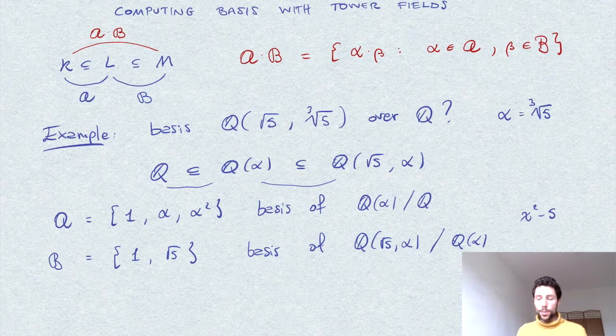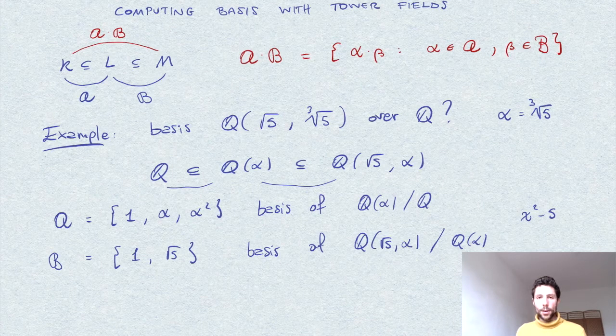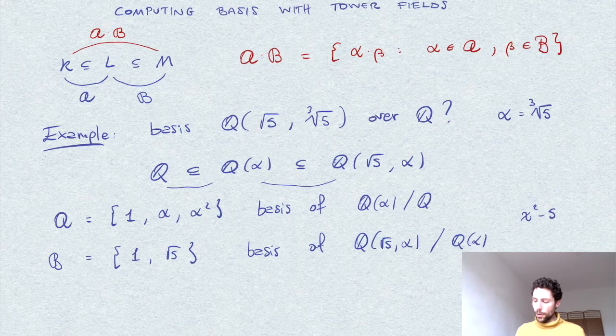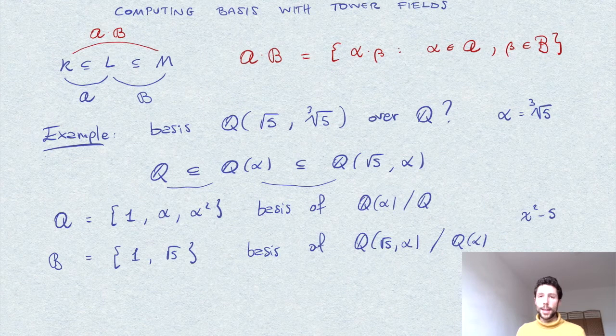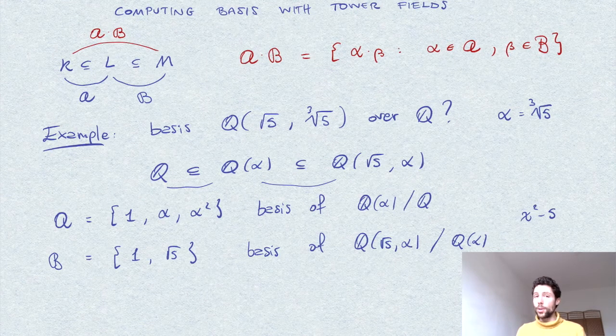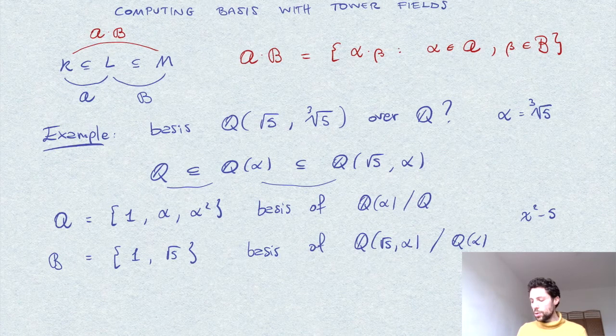If it were reducible, then it would admit a root in Q of alpha. This is not possible because then this root would give you an intermediate extension of degree 2, but Q of alpha is an extension of degree 3.